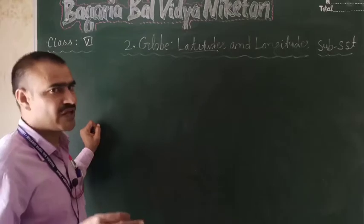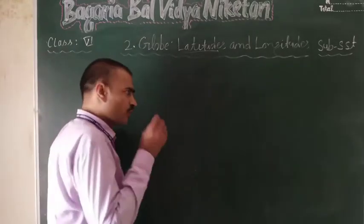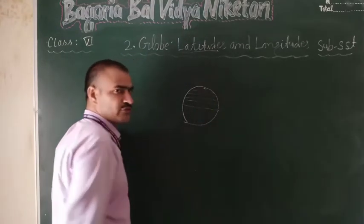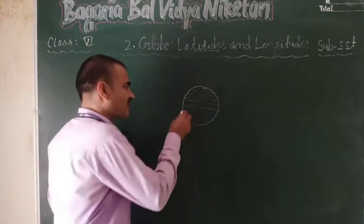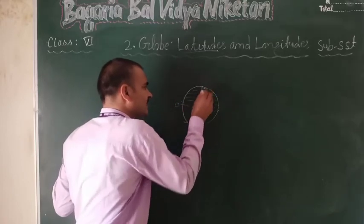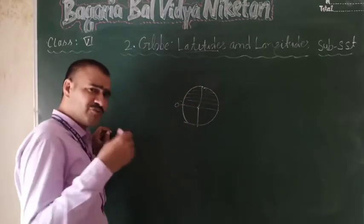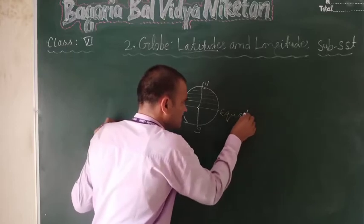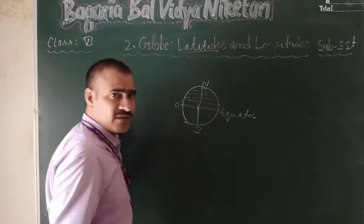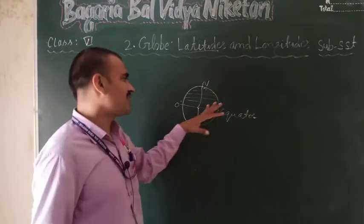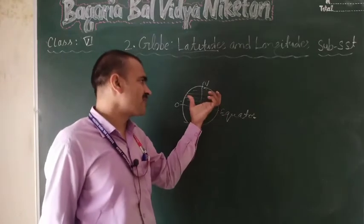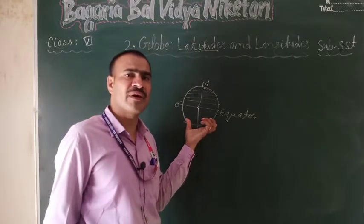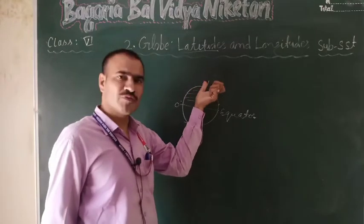We have already discussed horizontal lines — these are latitudes. We have 0 degrees, 90 degrees north, and 90 degrees south. We have the Tropic of Cancer, the Tropic of Capricorn, the Arctic Circle at 66 and a half degrees, the Antarctic Circle, the North Pole, and the South Pole.